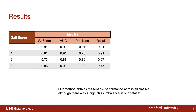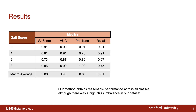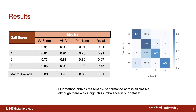Across all classes, our method achieves reasonable performance, setting a new benchmark for this task with a macro average F1 score of 0.83, AUC of 0.9, precision of 0.86, and balanced accuracy or average recall of 81%. The confusion matrix shows that our method does best on the control class and Class 1, followed by Class 3 and then Class 2. Clinical context suggests our results are consistent with physician experience: the most difficult class to categorize in clinical practice is score 2, since MDS-UPDRS defines its distinction from score 1 solely by minor versus substantial gait impairment.